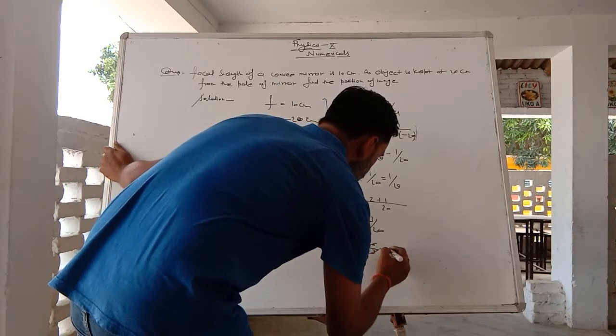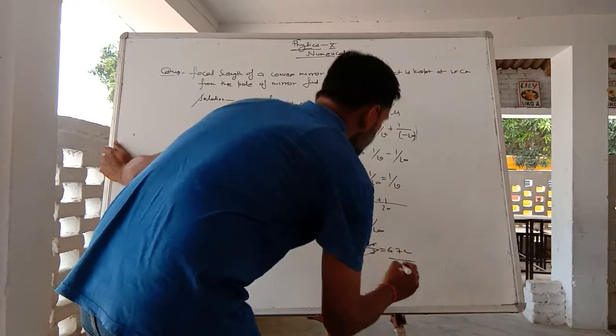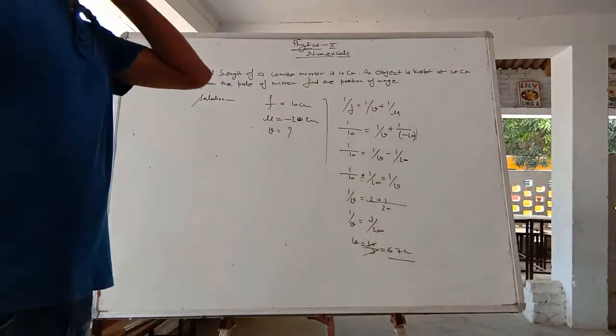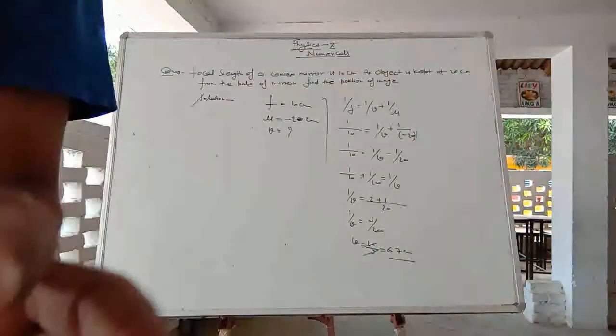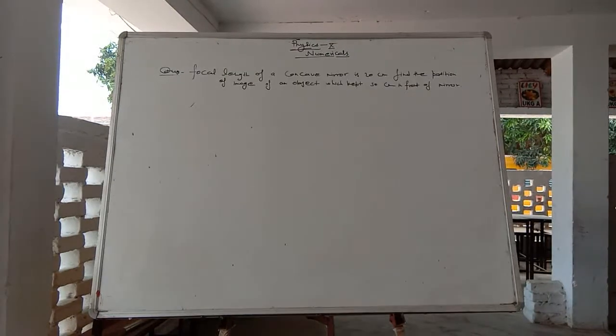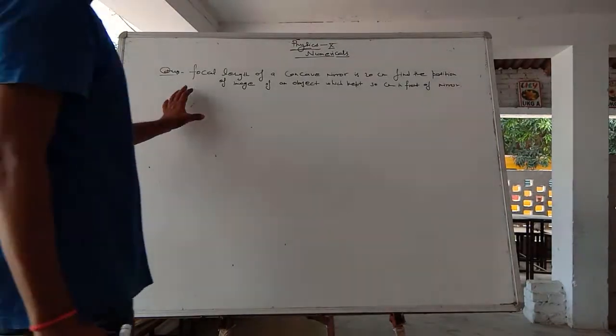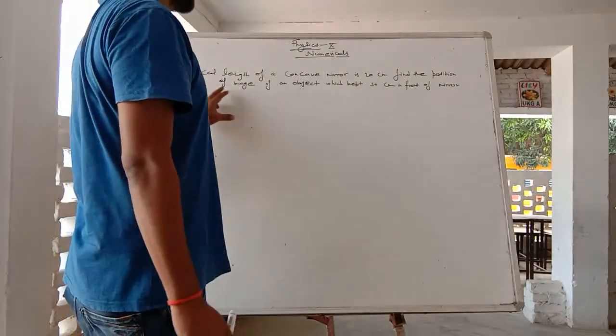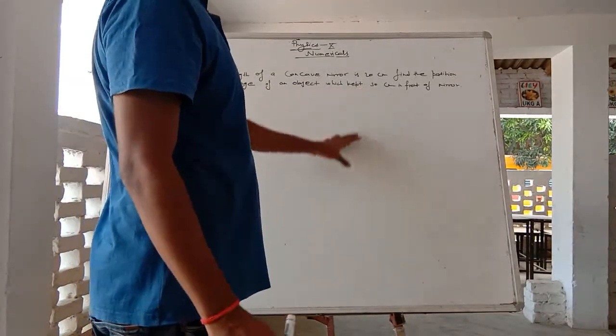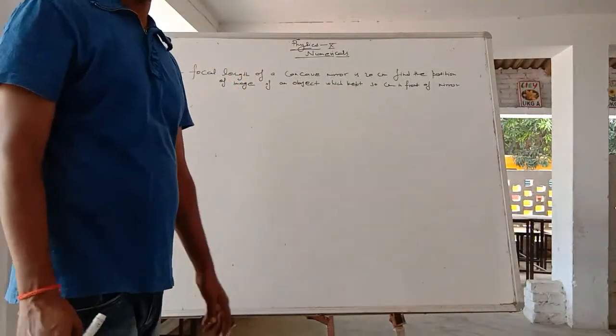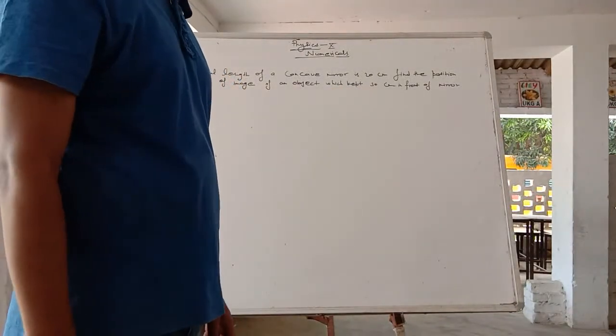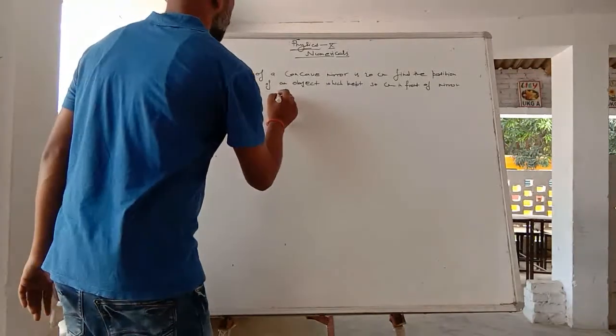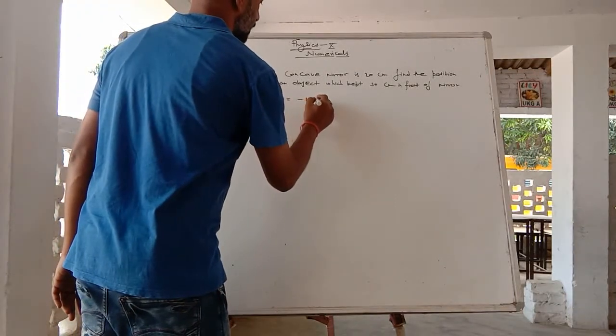V is equal to 20 upon 3. If we divide it, it is 6.7 cm. This is the image. Now see the second numerical. Focal length of a concave mirror is 20 cm. When we talk about the focal length of concave mirror, the focal length is negative. The value of f is minus 20 cm.